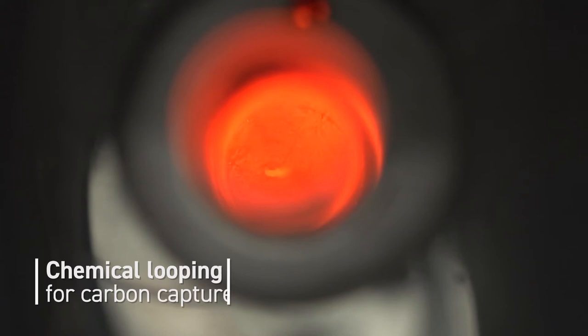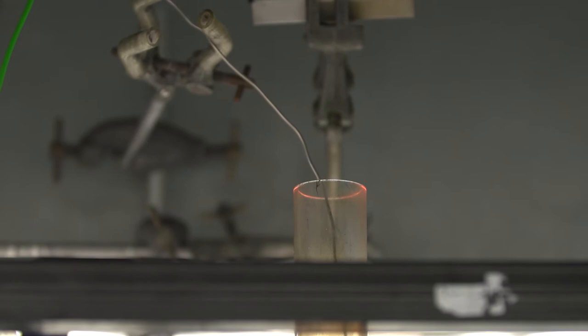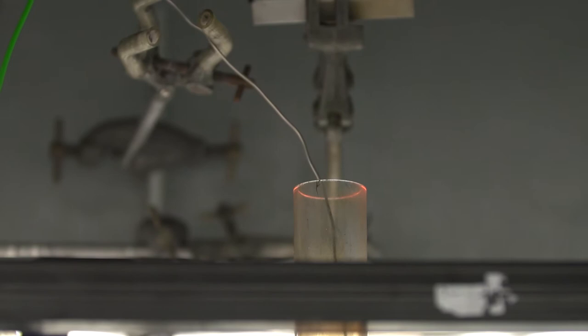One technology that we're working on is called chemical looping combustion and this enables carbon dioxide emissions to be captured more efficiently than with current technologies. The reactor technology that's essential for chemical looping combustion are known as fluidized beds and the group has done a lot of work to understand how these reactors behave and also what parameters govern their performance.